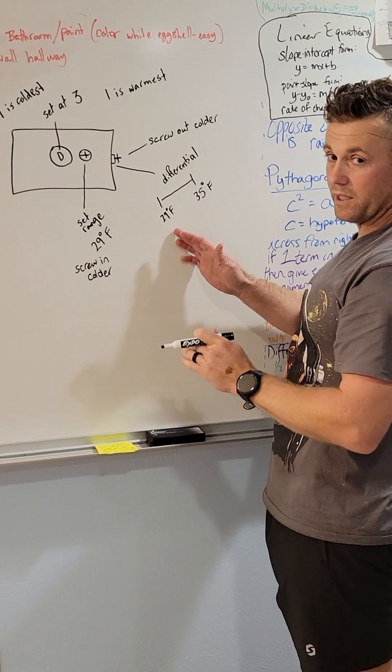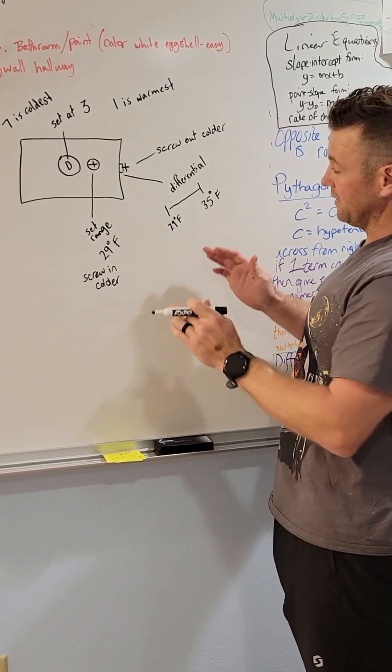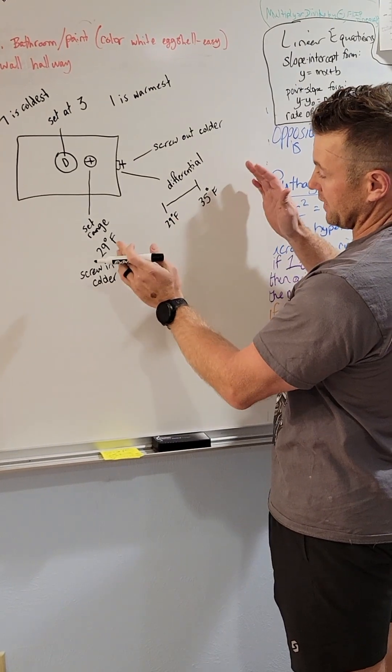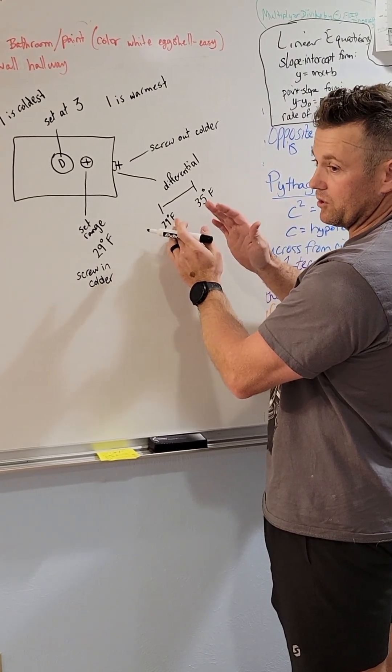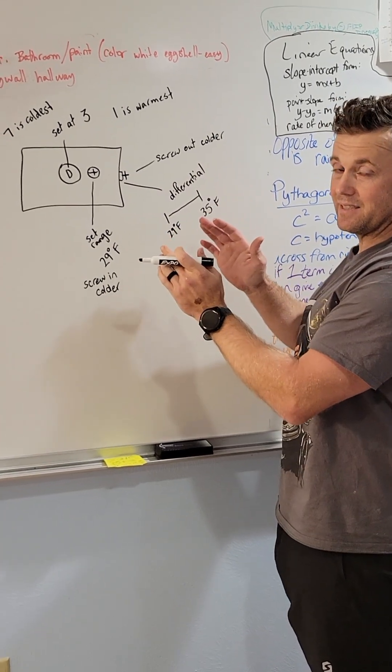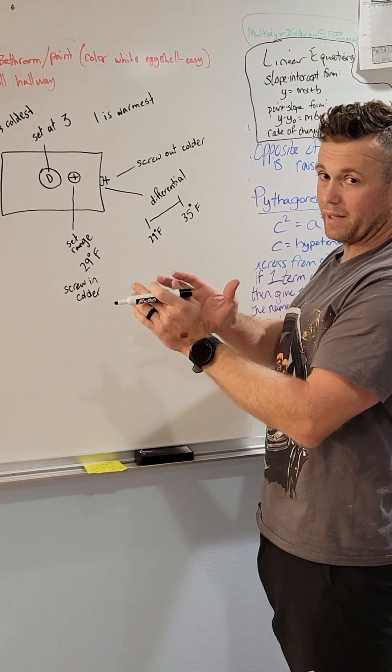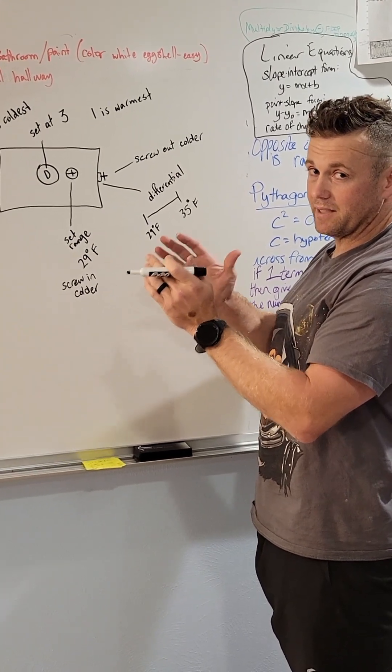So it would go from about 29 to 35 and it would cycle on and off in that range. So the differential is how big or how tight you want your range for your thermostat to be. It was originally about 16 degrees. So the drinks would basically go up to 45 degrees and then go all the way back down to 37, 38. But that's not ice cold.